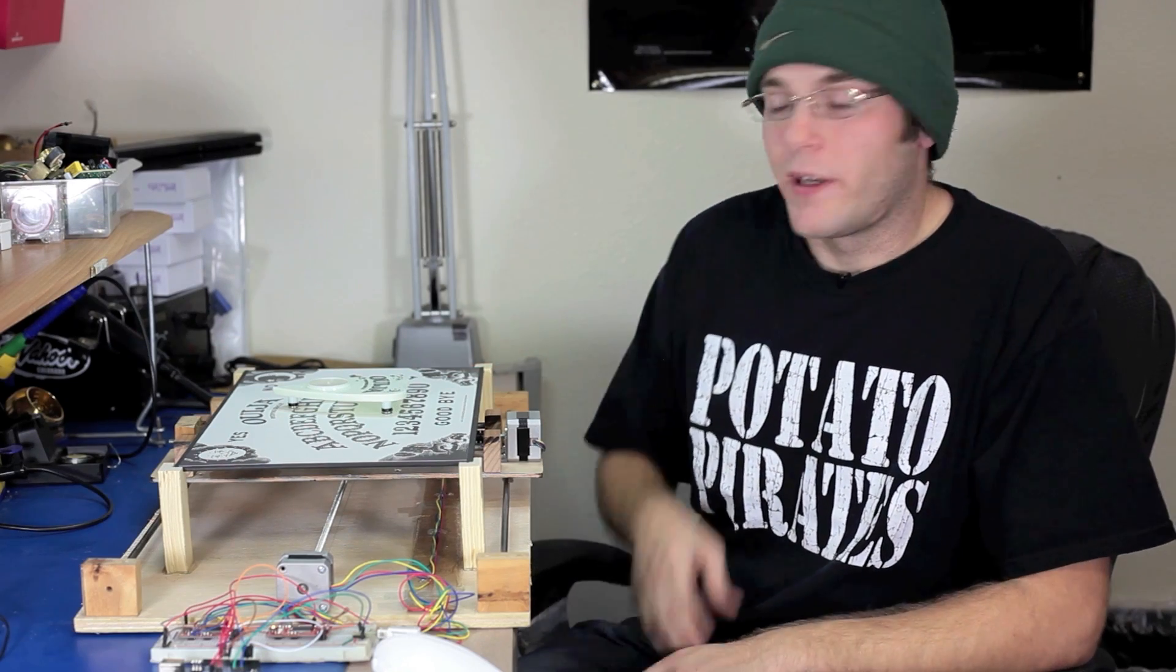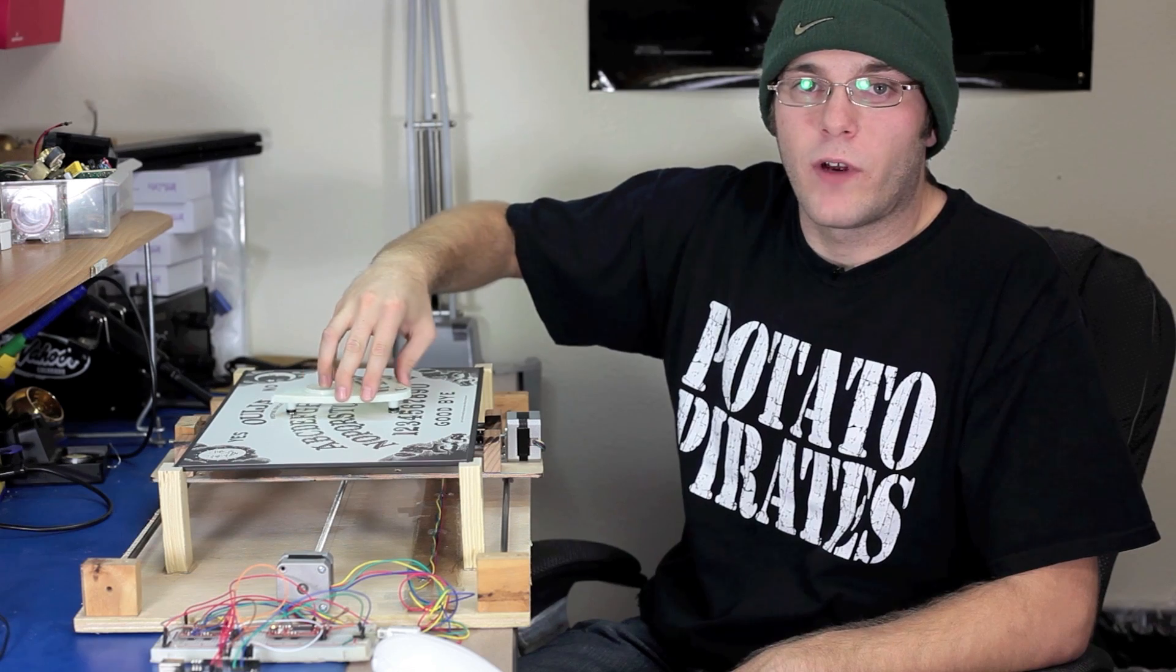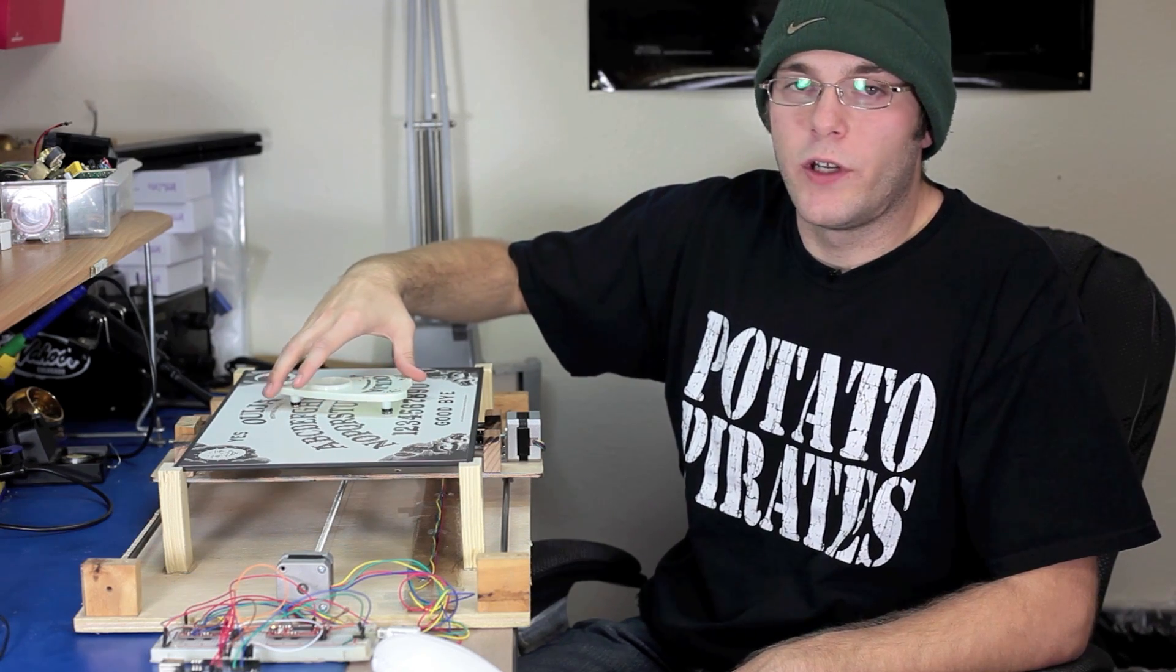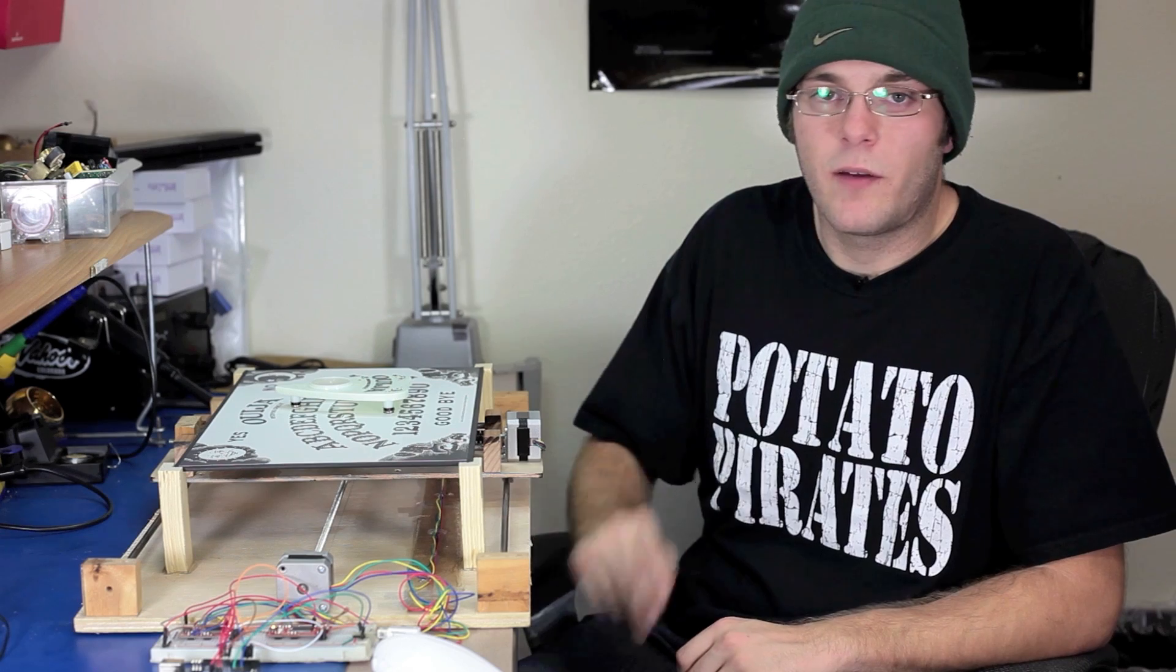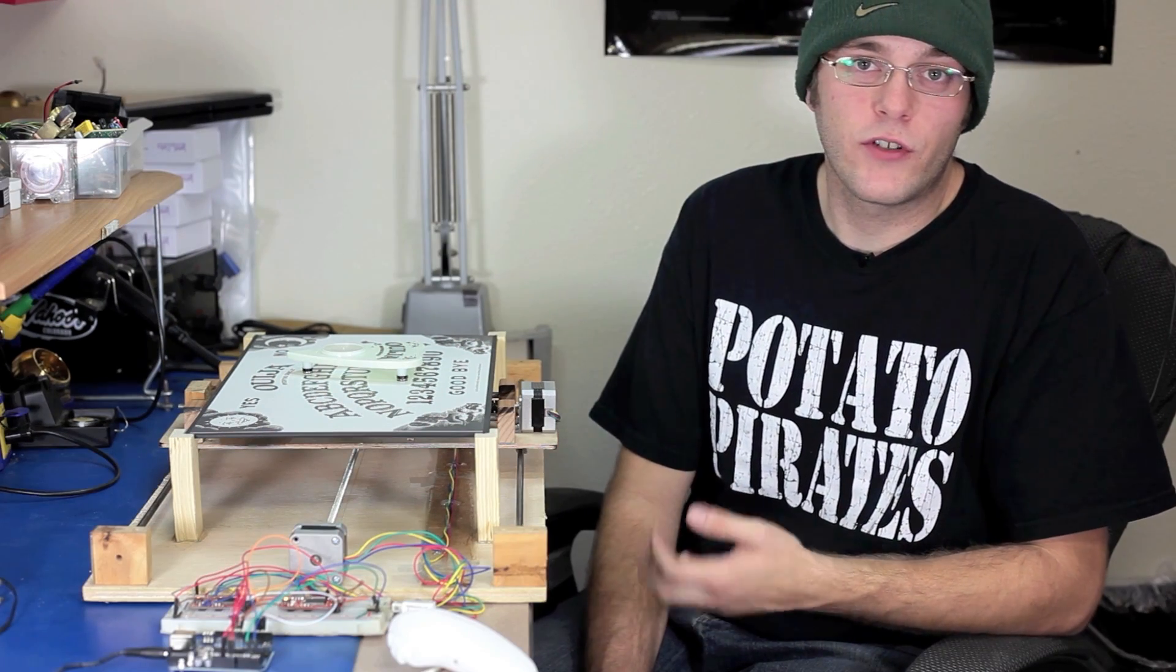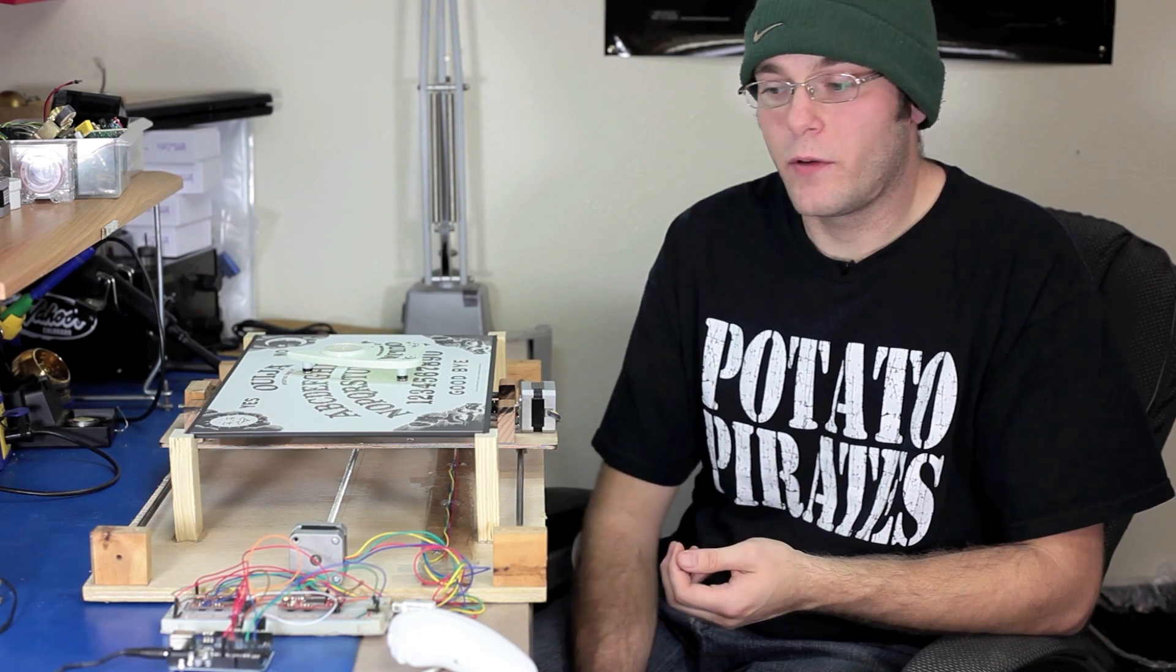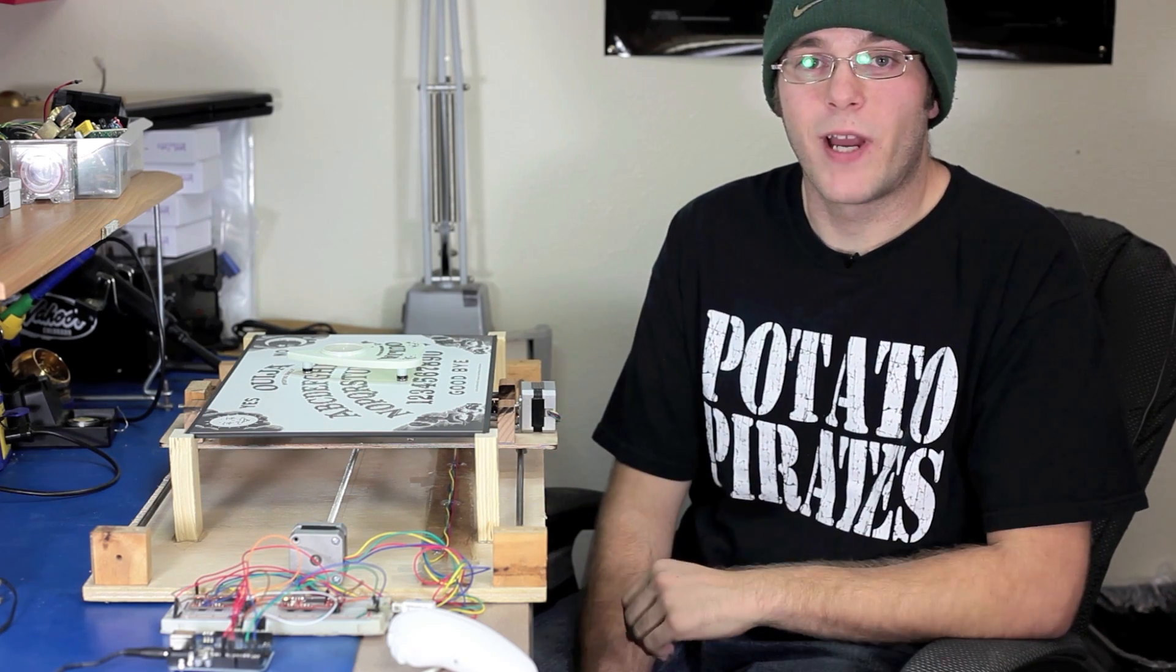One of the first improvements I would like to make is put a Z axis on here so that the planchette can move left and right, making it appear more fluid in its movement. One of the next things I would improve is adding a hard stop interrupt to keep the bases from crashing into the posts. This can be accomplished with a momentary switch or a photo interrupt to let the Arduino know when the base has actually reached its maximum position.